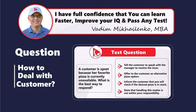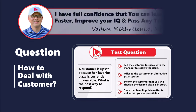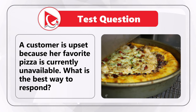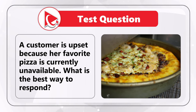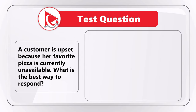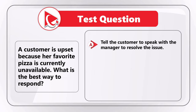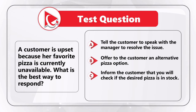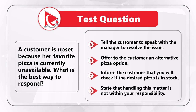Here's an interesting question about customer service. A customer is upset because her favorite pizza is currently unavailable. What is the best way to respond? Choices: A: tell the customer to speak with the manager; B: offer the customer an alternative pizza option; C: inform the customer you will check if the desired pizza is in stock; D: state that handling this matter is not within your responsibility.